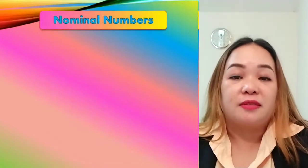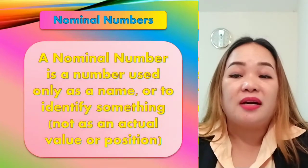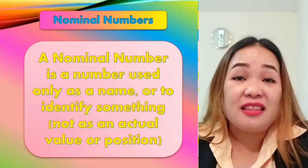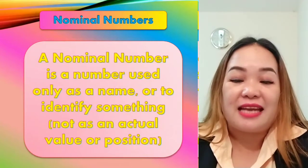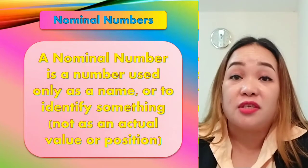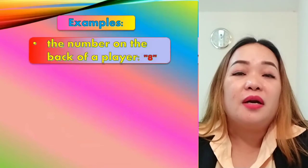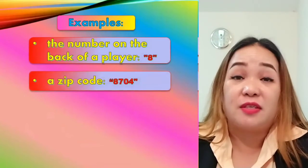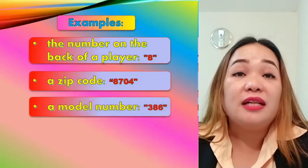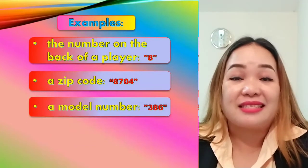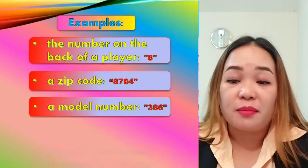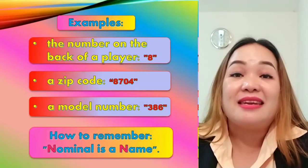Nominal numbers. A nominal number is a number used only as a name or to identify something, not as an actual value or position. For example, the number on the back of a player — 8 — or a model number 386. These are all nominal numbers. So how to remember this? Nominal is a name.